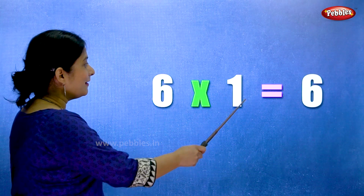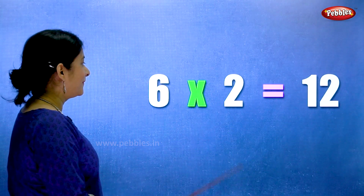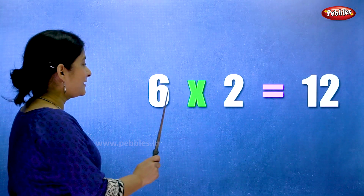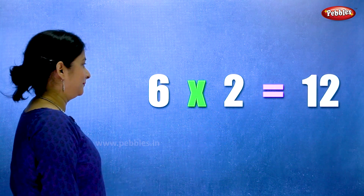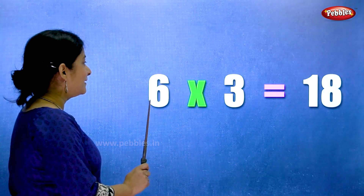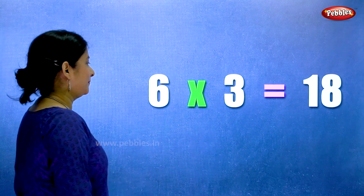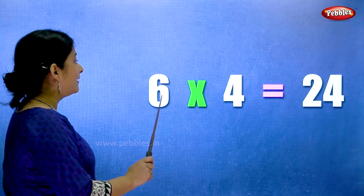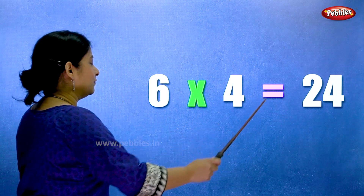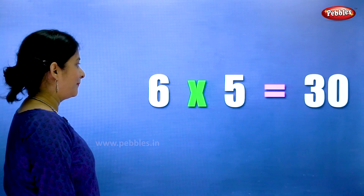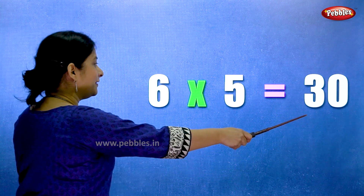Six ones are six. Six twos are twelve. Six threes are eighteen. Six fours are twenty-four. Six fives are thirty.